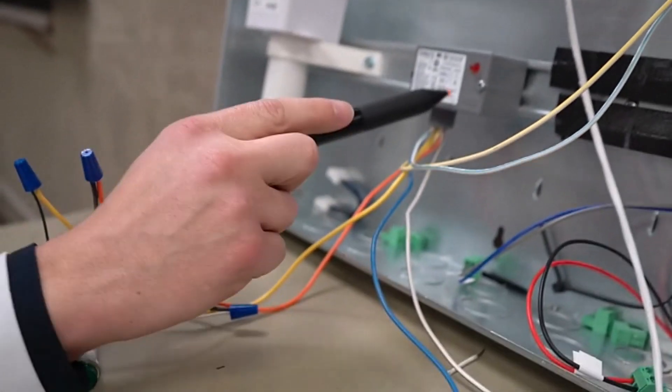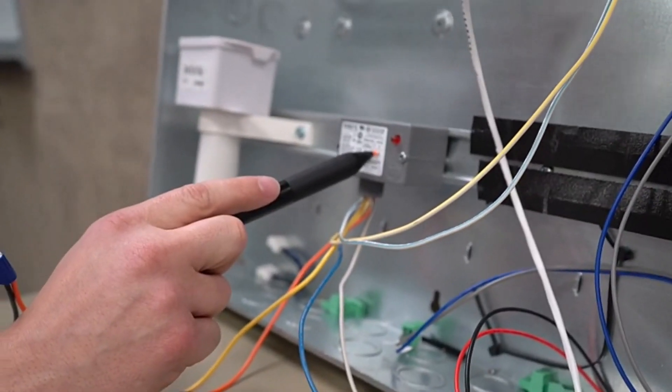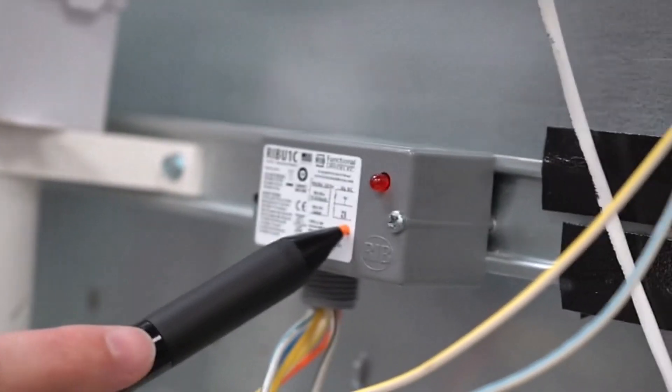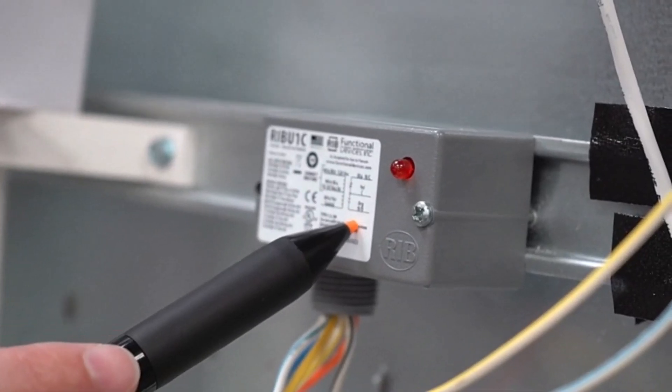Going back down to here, you can see on the other side we have the blue wire, which is normally closed, and we have the yellow wire, which is our common, and then we have our orange wire, which is normally open.